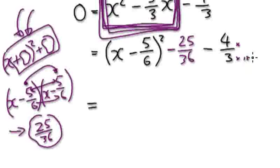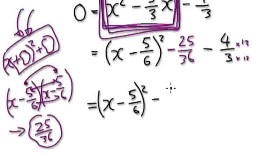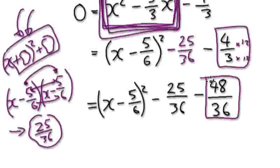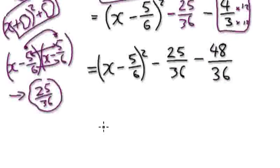Okay, so this will then become x minus 5 over 6 squared minus 25 over 36, minus 4 times 12 is 48 over 36 over 36. Okay, so this fraction here is exactly the same as this fraction here. So now the two denominators are the same. So let's merge them together.